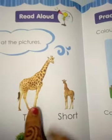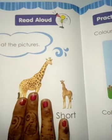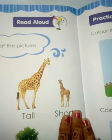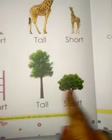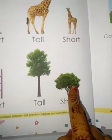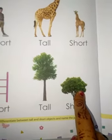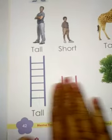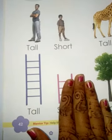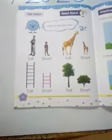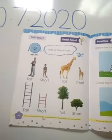Now we will look at giraffes. This is a tall giraffe, and this is a short giraffe. Then tree — tall tree, short tree. Tall, short. You have to learn tall and short.